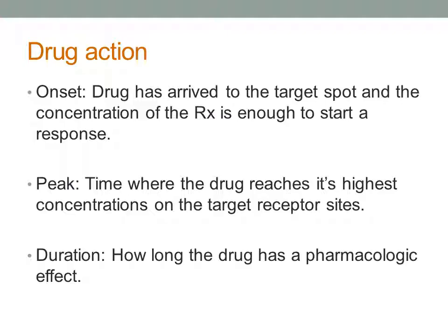All drugs have an onset, peak, and duration. Onset is when the drug has arrived at the target site and the concentration is enough to start a response. Peak is the time when the drug reaches its highest concentration on the target receptor sites. Duration is how long the drug has a pharmacological effect.